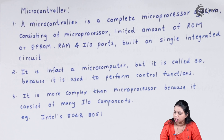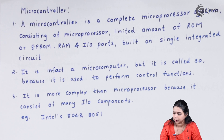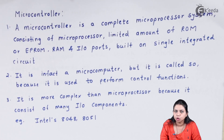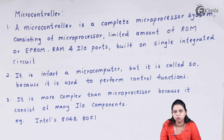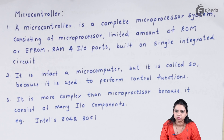In fact, it is called a microcontroller because it is used to perform a control function. It is more complex than a microprocessor because it consists of many input and output components. Examples of microcontrollers are Intel 8048 and Intel 8051. In this topic, we are going to discuss more about the Intel 8051 microcontroller.